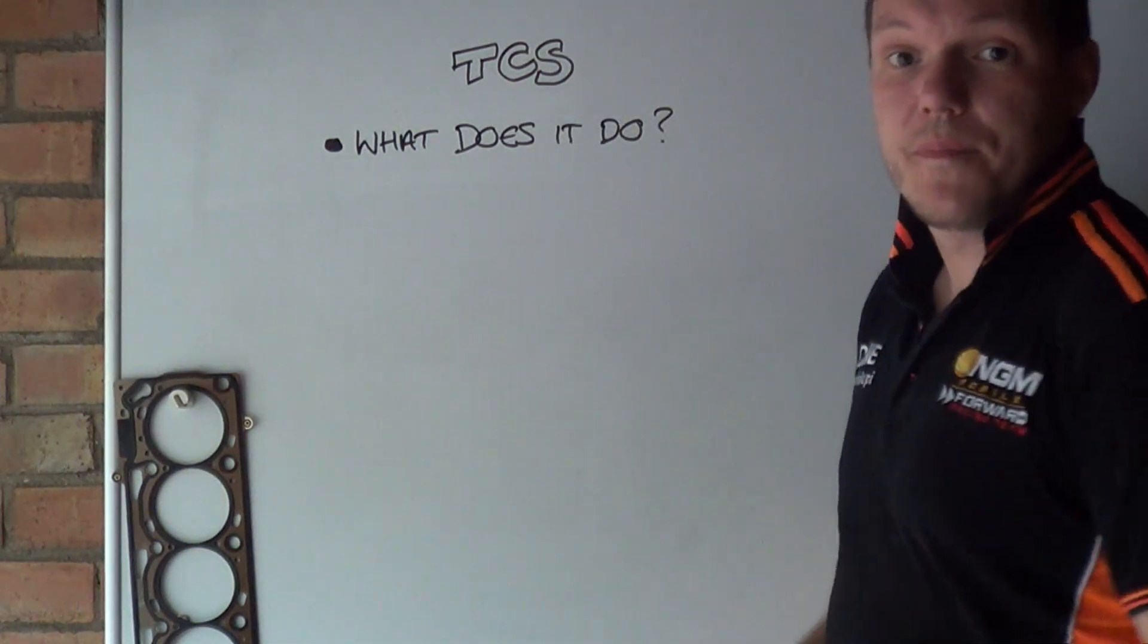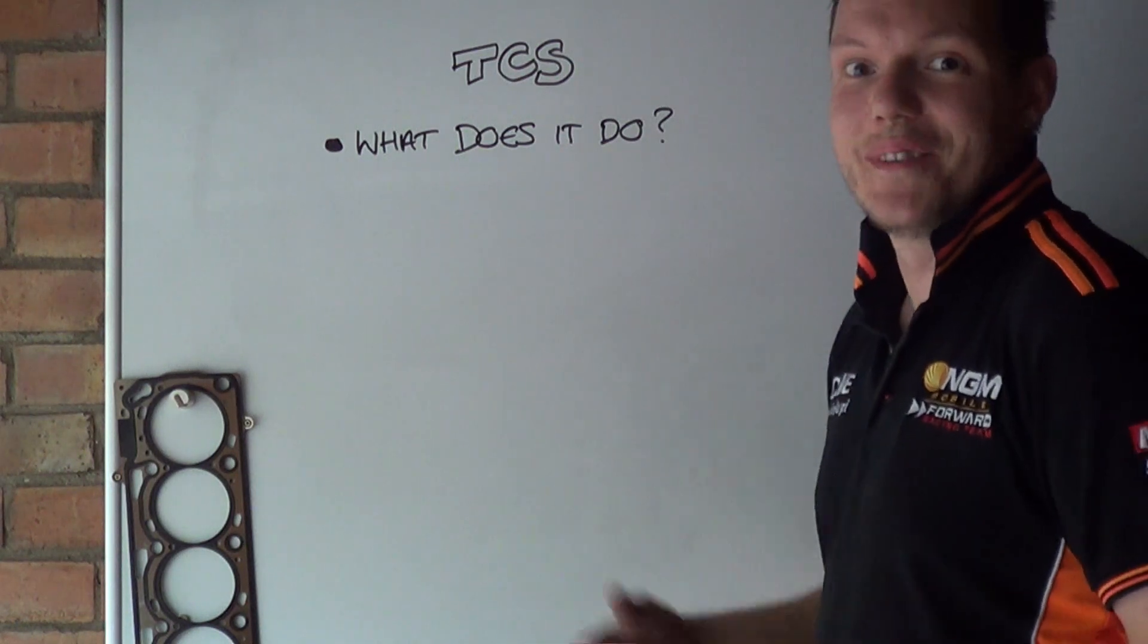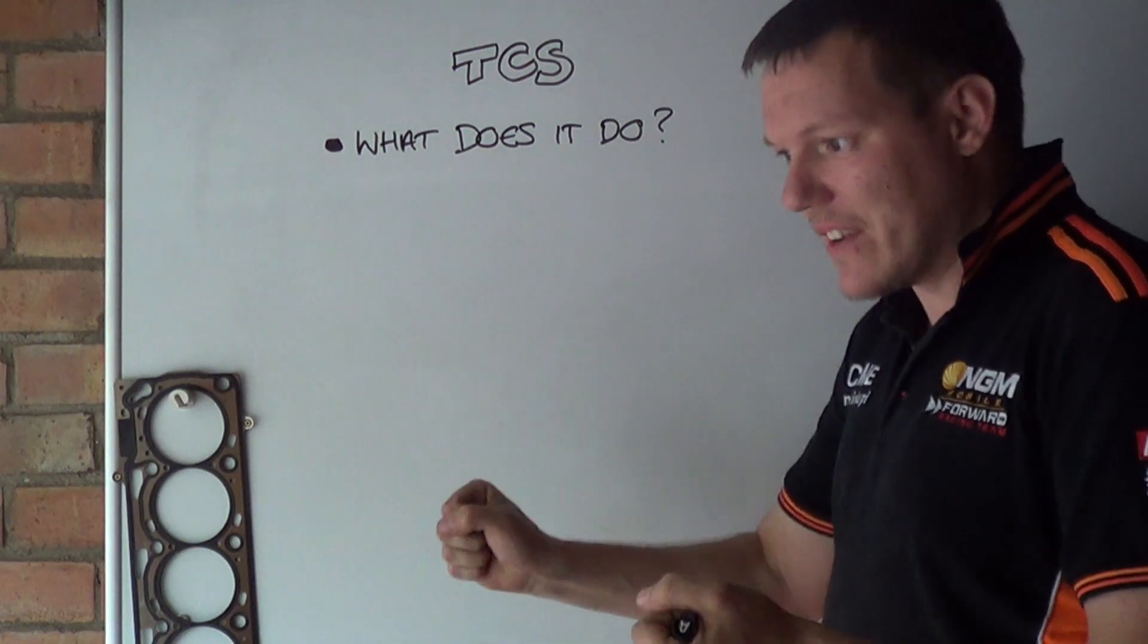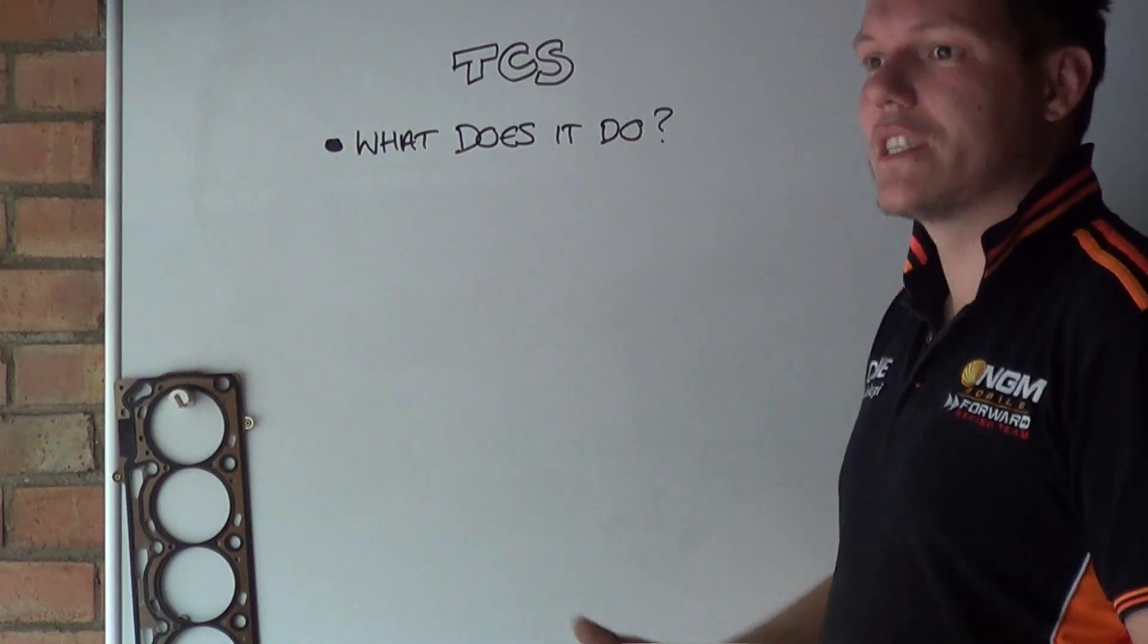So what does it do? The traction control system regains traction when you lose it. When you accelerate and give it a load of gas and the wheel starts to spin because traction is lost.